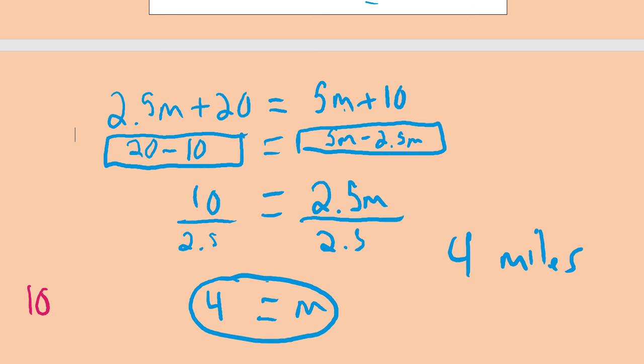You know, if you put 4 in for m here, that would be 5 times 4, which is 20. 20 plus 10, which is 30. If I put 4 in here, 2.5 times 4 gives me 10. And then 10 plus 20 gives me 30.